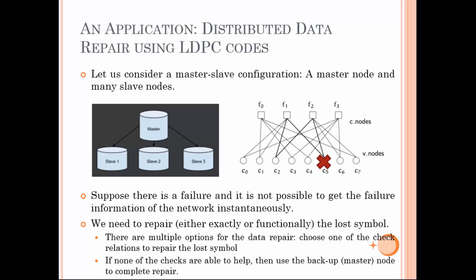If none of the checks are able to help, then we use the backup master node to complete the repair. For example, if the data symbol C5 is lost and unable to be retrieved, then we can either use F1 to access C0 and C2, or F2 to access C2, C6, and C7. As can be guessed, more accesses generate more bandwidth and I/O — in other words, more costs. If none of these options are able to help — due to other failures, link breakages, or insufficient bandwidth — we contact the master for a direct download, which is typically more costly compared to device-to-device communication.